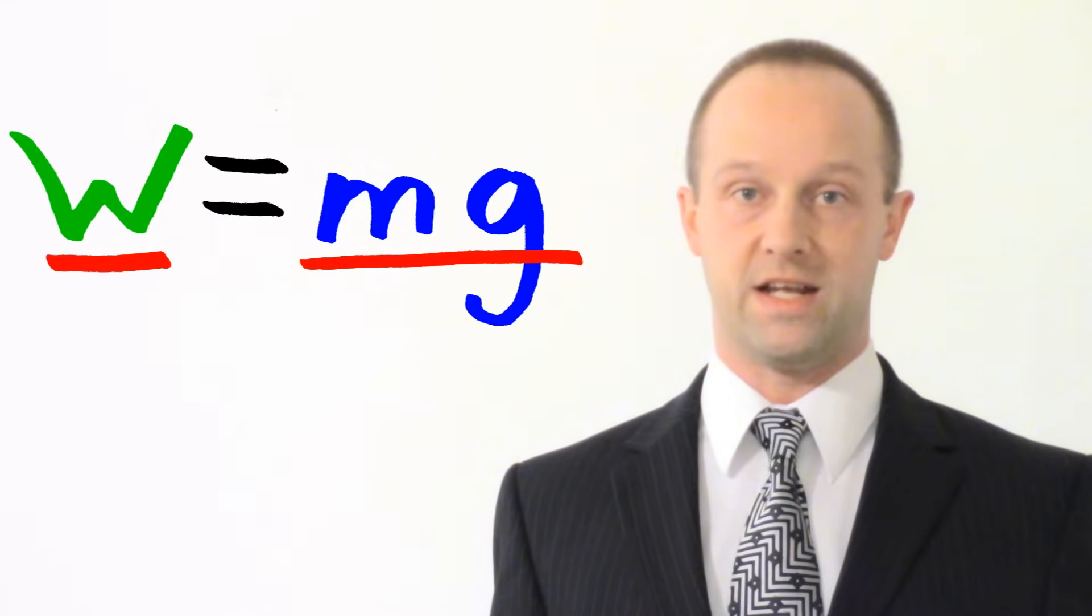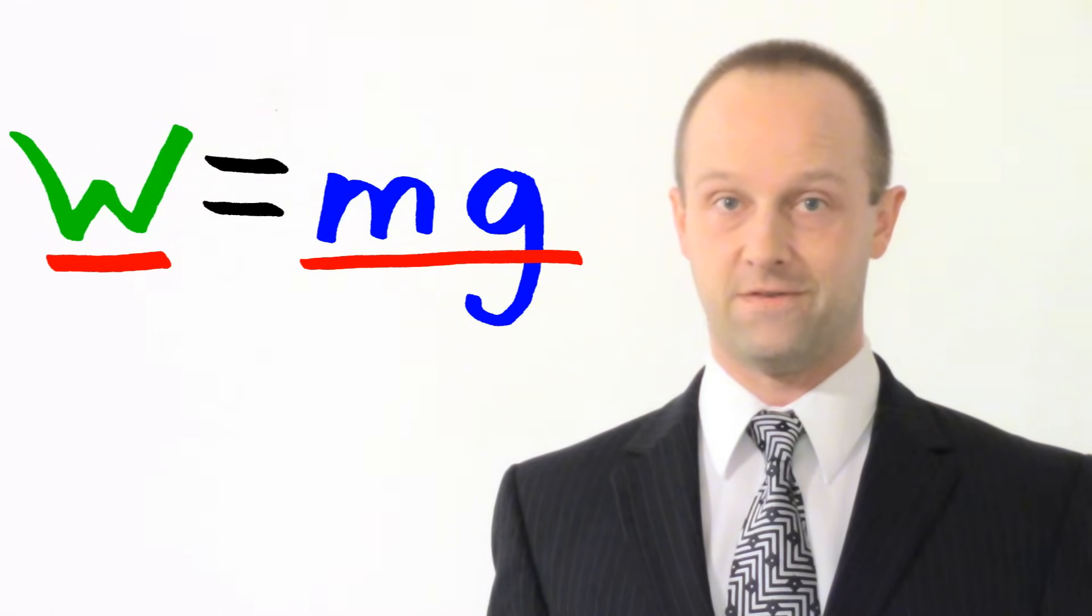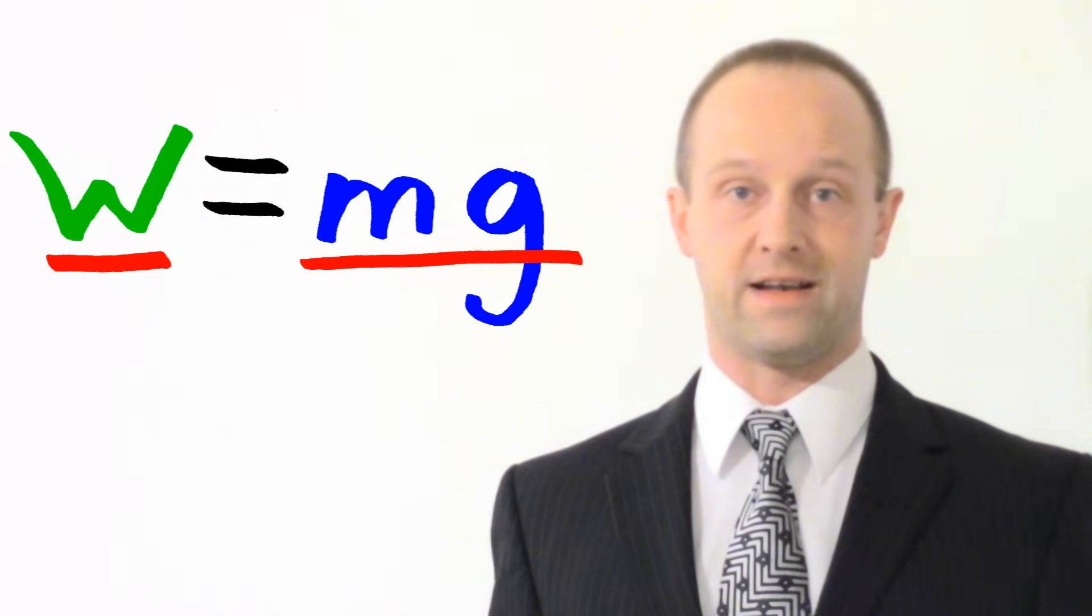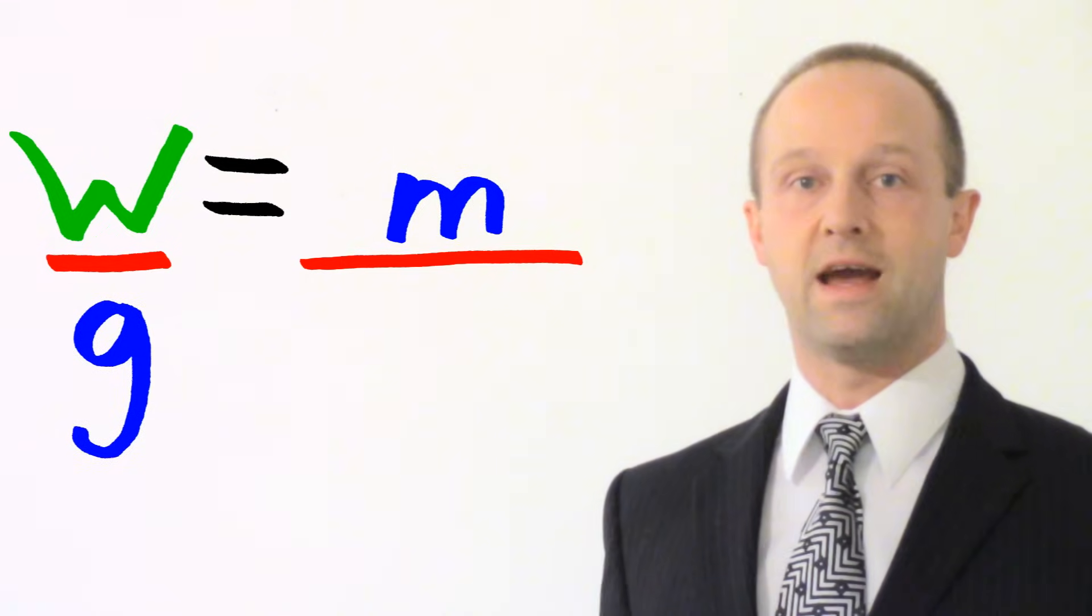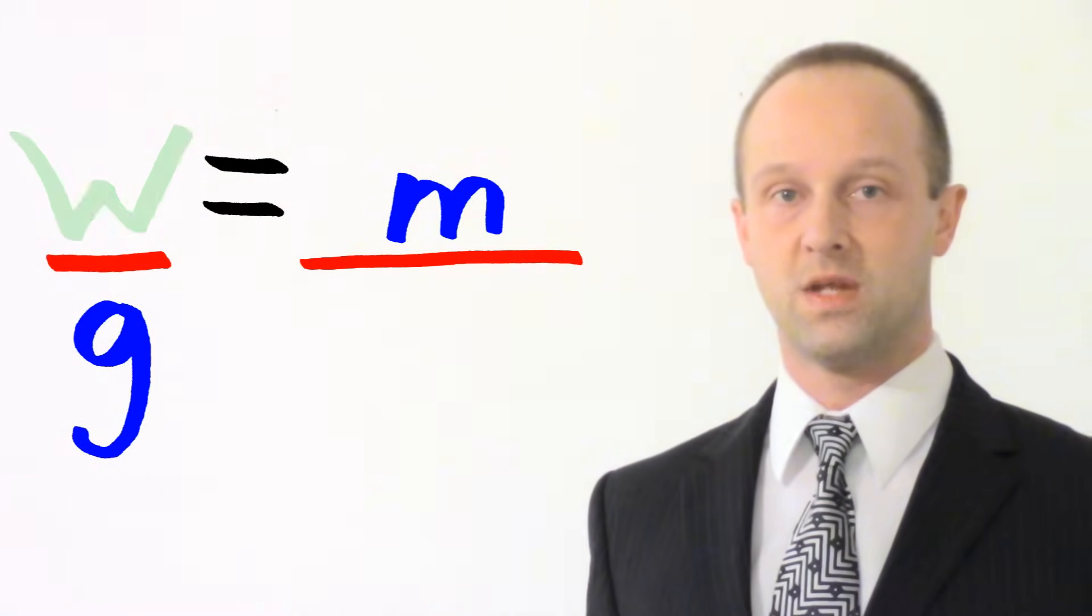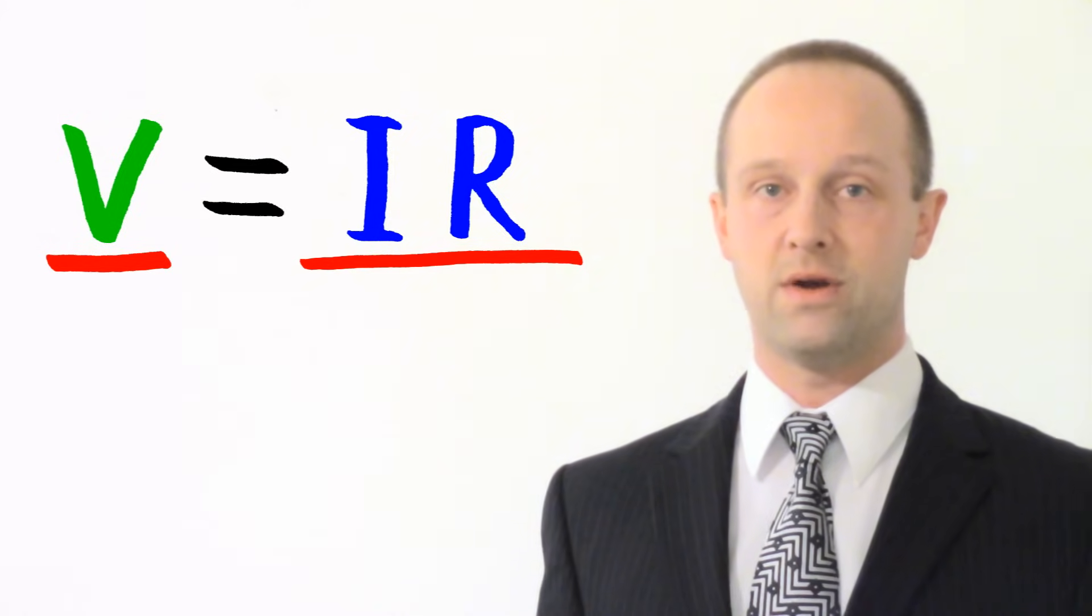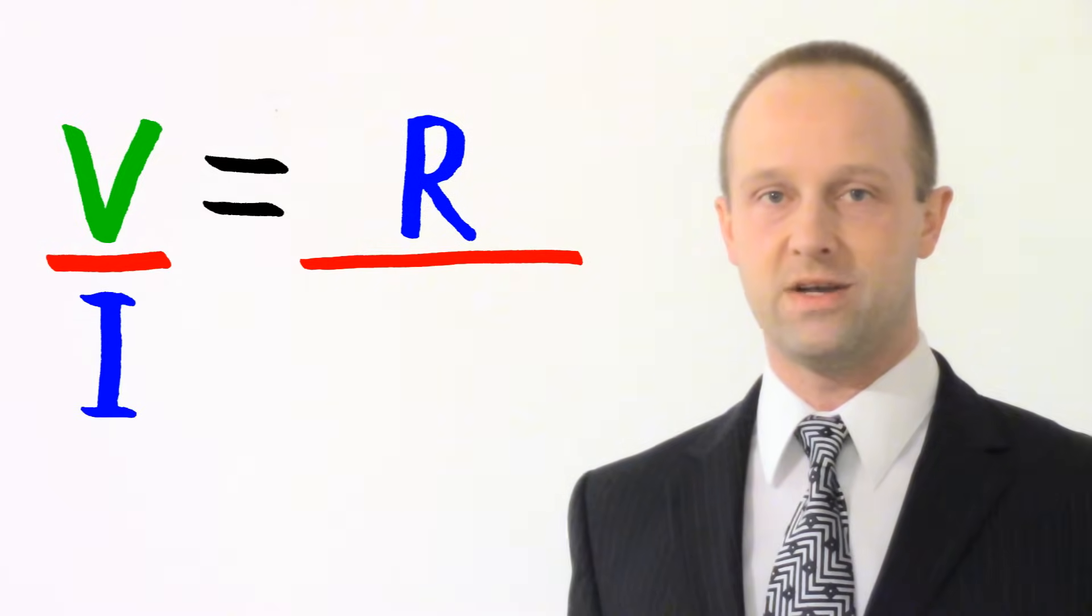I'm not going to go through every single equation because it would get pretty boring. But let's have a look at a couple more examples. So, W equals MG. If I know what G is and I want to find M, then I just move that G across like this. Or let's say V equals IR. And let's say I want to find out what R is, then I can just move that I out of the way like this. How easy is that?